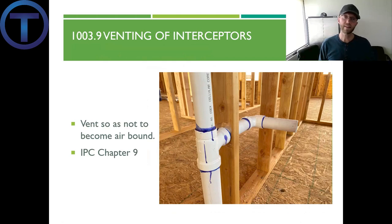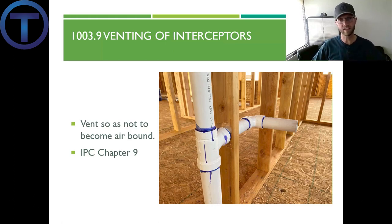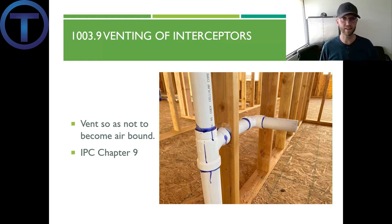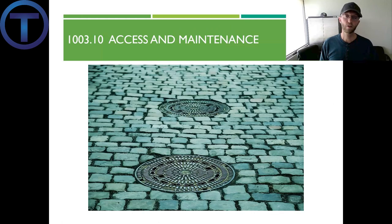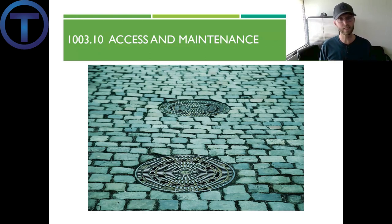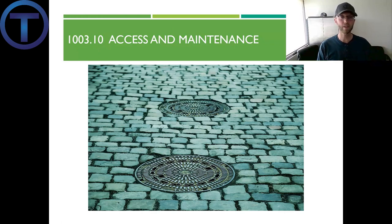Section 1003.9 talks about the venting of interceptors, stating they have to be vented so as not to become air bound — we don't want these to be air locked so that fluid can't flow through. International Plumbing Code Chapter 9 gives more information about creating vents that allow for airflow. Section 1003.10 talks about access and maintenance: any of these interceptors or separators must be accessible so maintenance can be performed, which basically means going in and pulling that grease and scum out every so often.